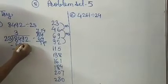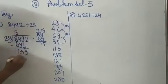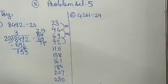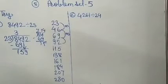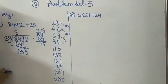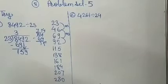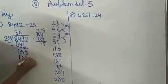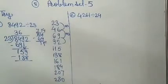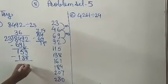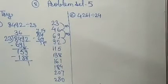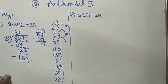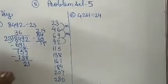Now we will take the next number, that is 9. So take that down. In the table of 23, is 159 there? No, it is not there. So we want the number smaller than 159. Which number is it? 138. So 6 times 23 is 138. Now subtract: 9 minus 8 is 1, 5 minus 3 is 2, and 1 minus 1 is 0.